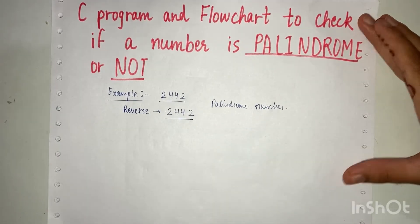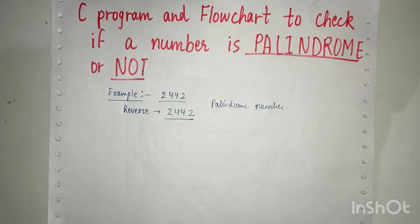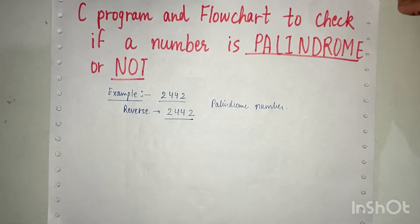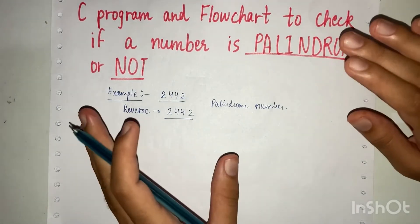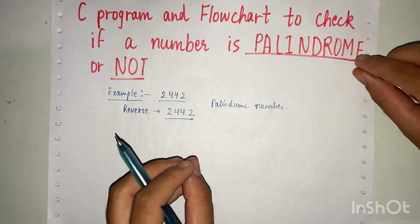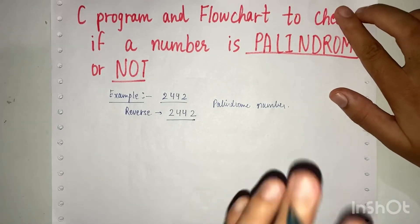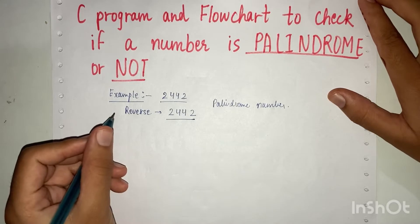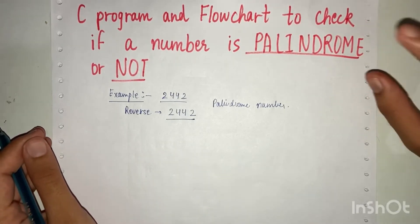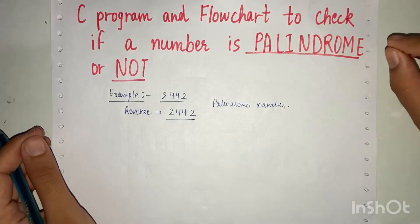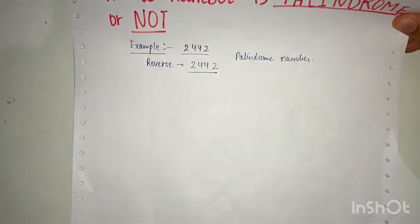If the reverse of a number is equal to the original number, then it is a palindrome number. In the previous video I showed how to find the reverse of a number — if you haven't watched that, you can watch it first. In this video we will input a number from the user, find the reverse of that number, and then check if the reverse is equal to the original number. The previous video is linked in the description or accessible from the C program playlist. Now I'll draw the flowchart for palindrome number.